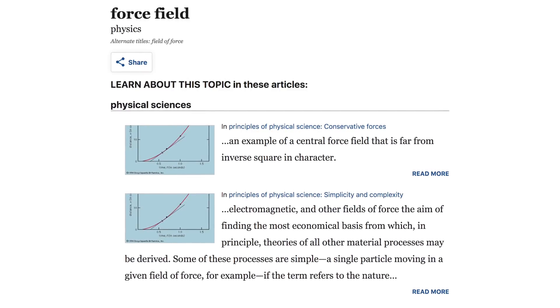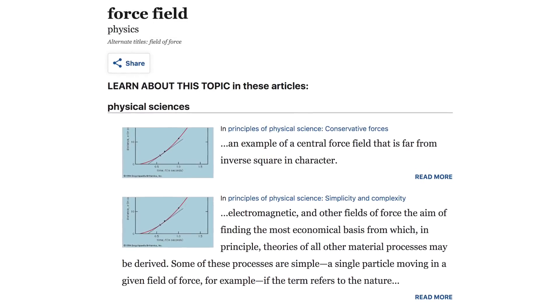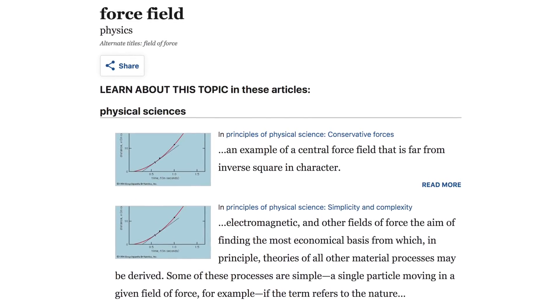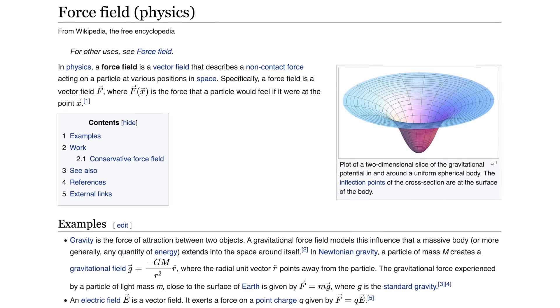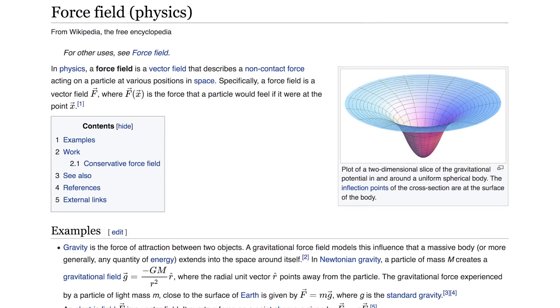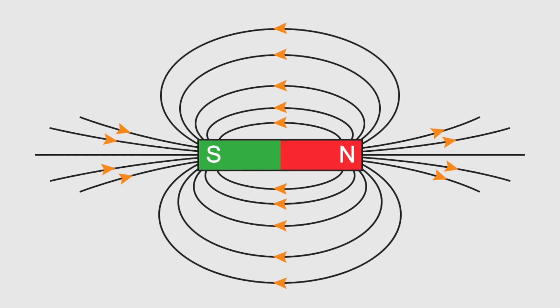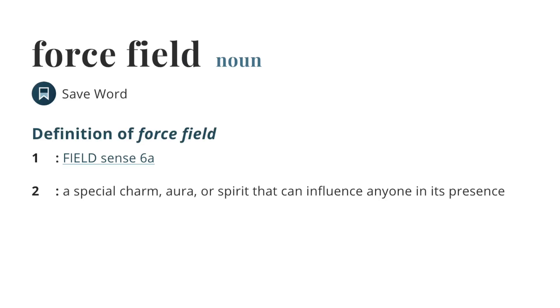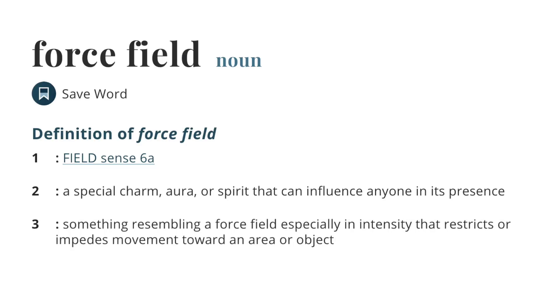The lack of intellectual rigor in science regarding the nature of a force field appears right up front in the dictionary definitions. One such is that it is a computational method. Another is it's a map of force. Webster's Dictionary defines field as a special charm, aura, or spirit that can influence anyone in its presence, then defines it redundantly as something resembling a force field.